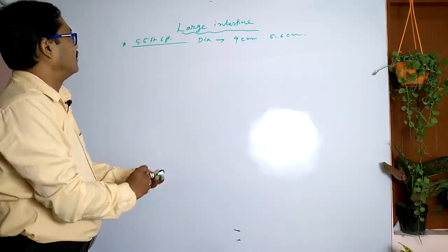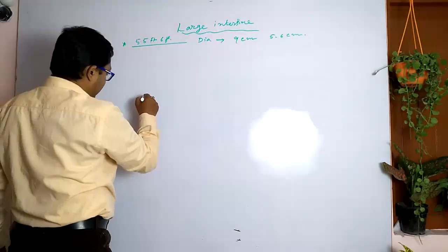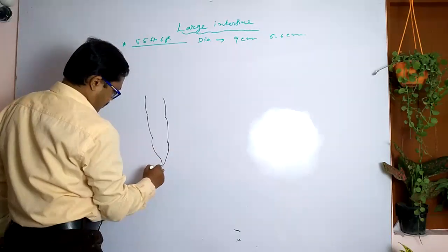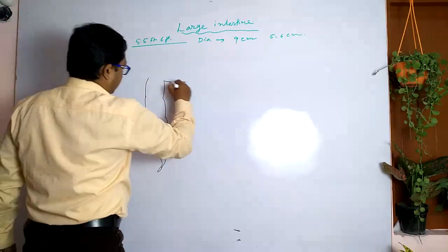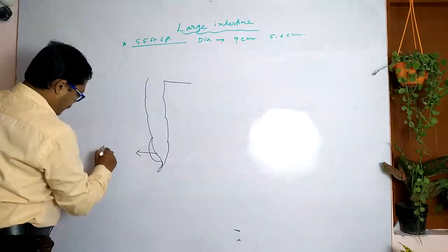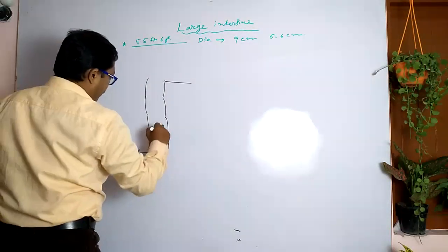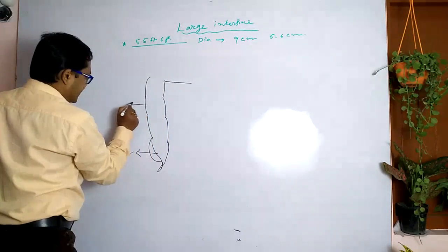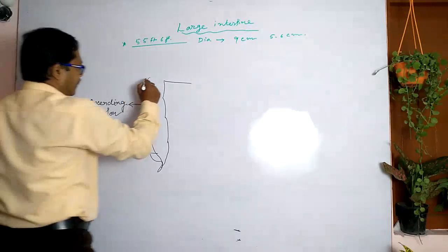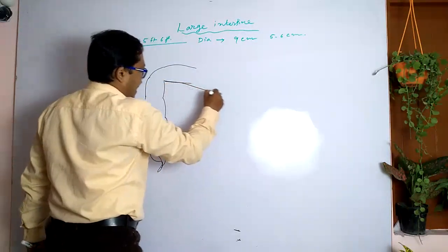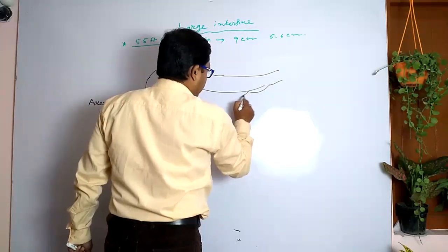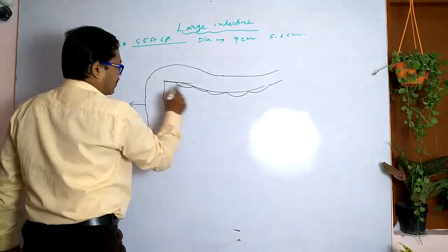Let's draw the structure of the large intestine. The large intestine is situated at the abdominal zone. One part is called the cecum. This part is called the ascending colon. Then we draw the structure with some hanging structures.